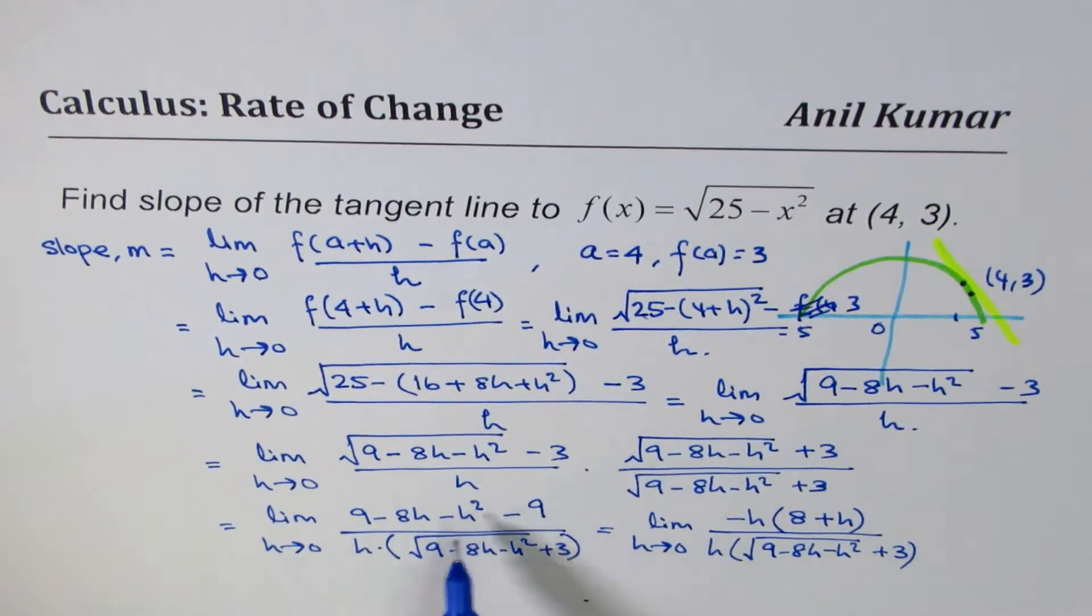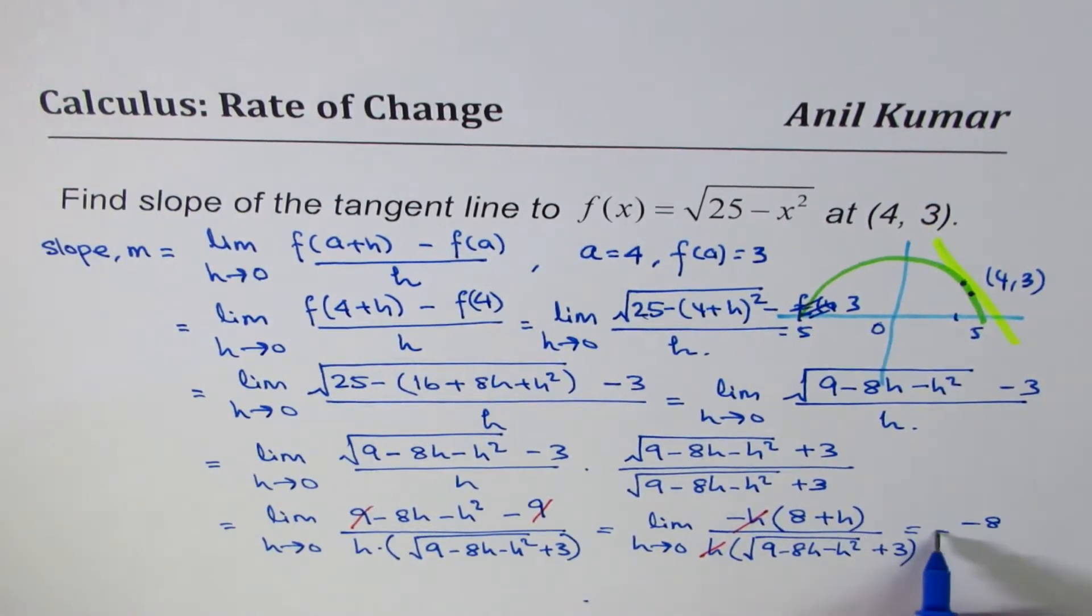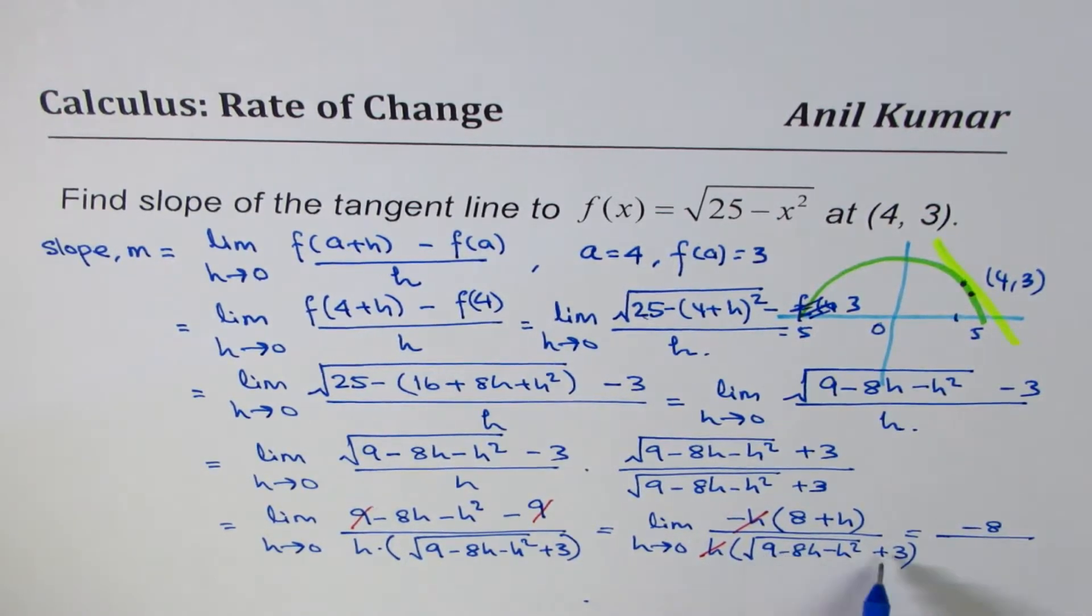So what we did here was, 9 and 9 becomes 0. Here, we took h common, minus h common. So we get 8 and plus 1. If you open, you get minus 8h and minus h square. Now we can cancel h and h. And at this stage, once you cancel, you can substitute h equals to 0. So we get minus 8 over, h is 0. So we get square root of 9 here, plus 3. So we have square root of 9, plus 3.